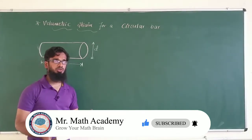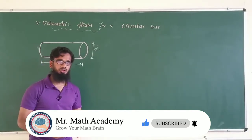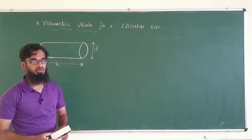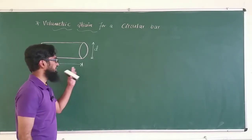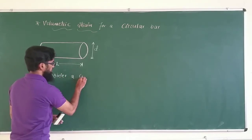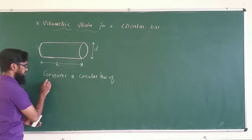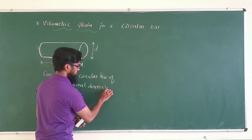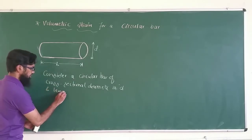The process and procedure are the same — there are no changes. First we need to find out the volume of the member. Consider a circular bar of cross-sectional diameter d and length l.